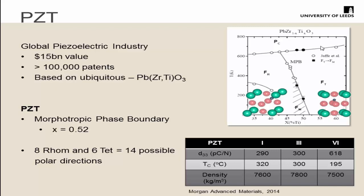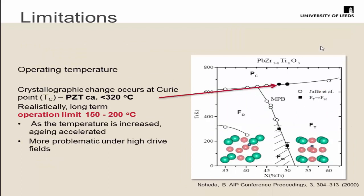PZT is a fascinating material. Its properties come from the mixing of phases — crystallographically based, mixing the rhombohedral into tetragonal phase to develop these piezoelectric coefficients we use day in and day out. But it comes with limitations: in the scope of the METCO project, that is temperature. The piezoelectric Curie point is about 320 degrees on this MPB, but realistic long-term usage is only up to about 200 degrees. As temperature increases, a lot of the losses increase with that, and it can become problematic specifically for actuators.